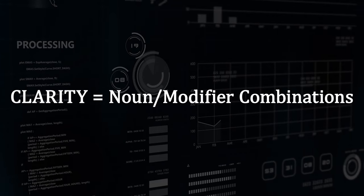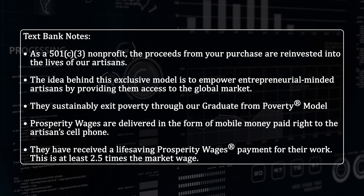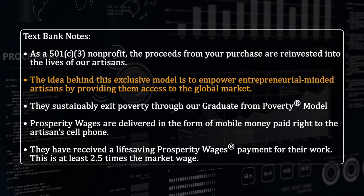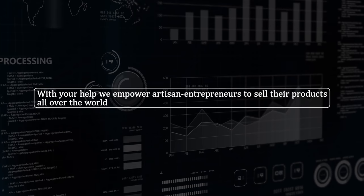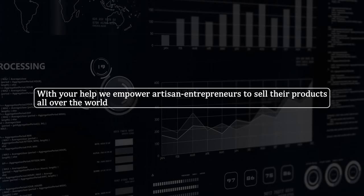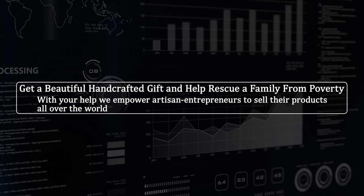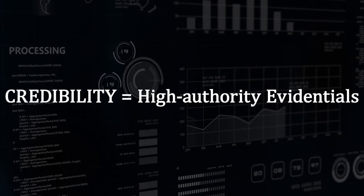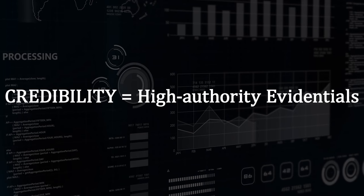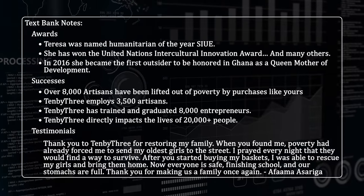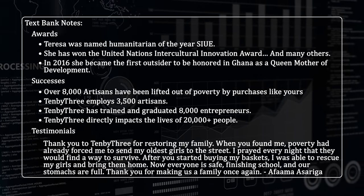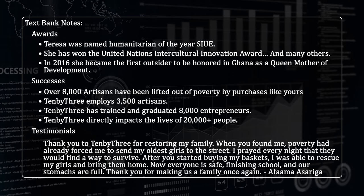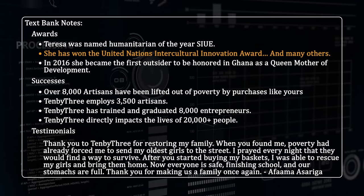Let's aim for clarity first. We're going to craft four of these. If we're aiming at clarity, we need noun-modifier combinations. We look at our text bank, select a salient point, and focus it into the words of a subheadline: 'With your help, we empower artisan entrepreneurs to sell their products all over the world.' That combination of the new headline and this subheadline should help people understand better. But what if your goal is credibility? Especially for a not-for-profit where people have to trust you with their contribution. We go back to the text bank, look at awards, successes, and testimonials, and craft a credibility subheadline.